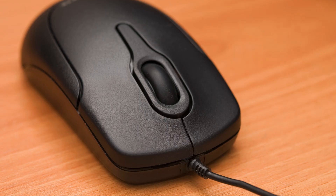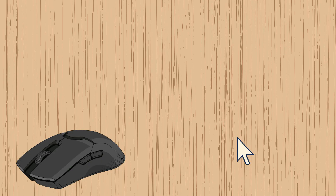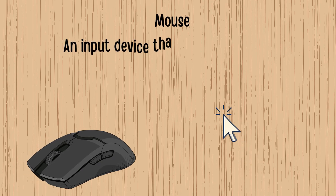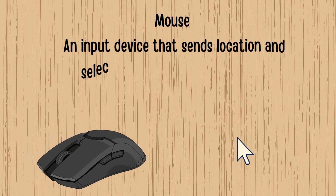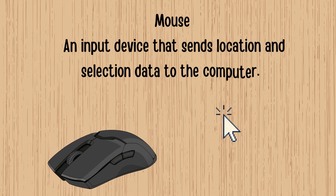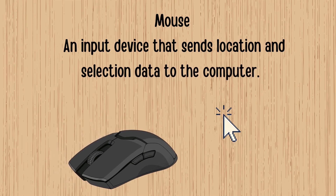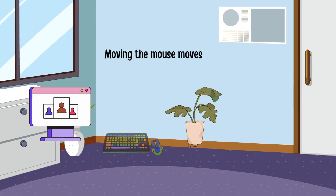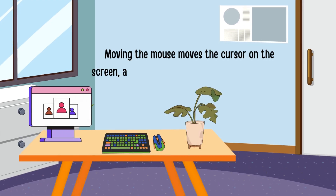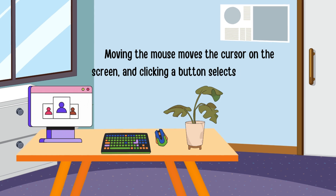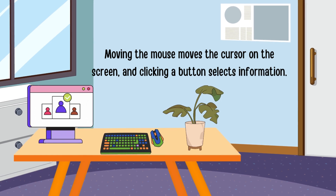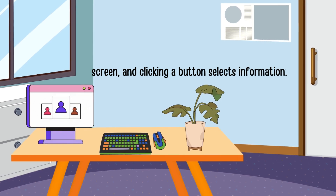Mouse: an input device that sends location and selection data to the computer. Moving the mouse moves the cursor on the screen, and clicking a button selects information.